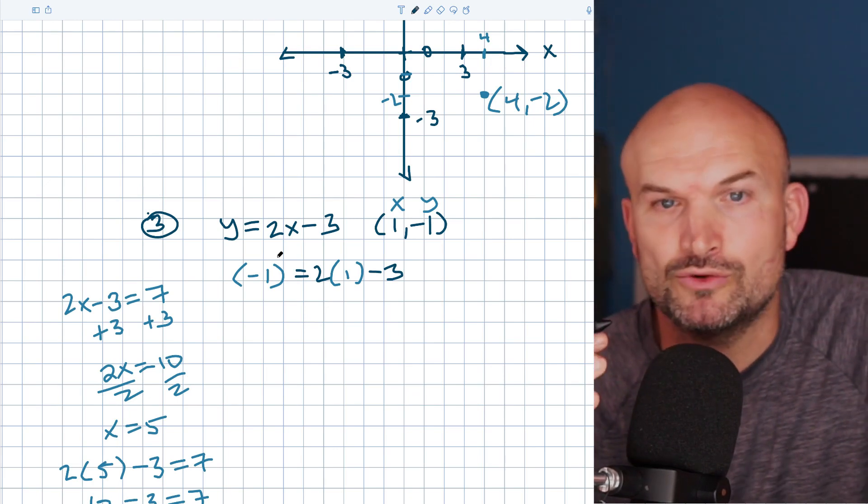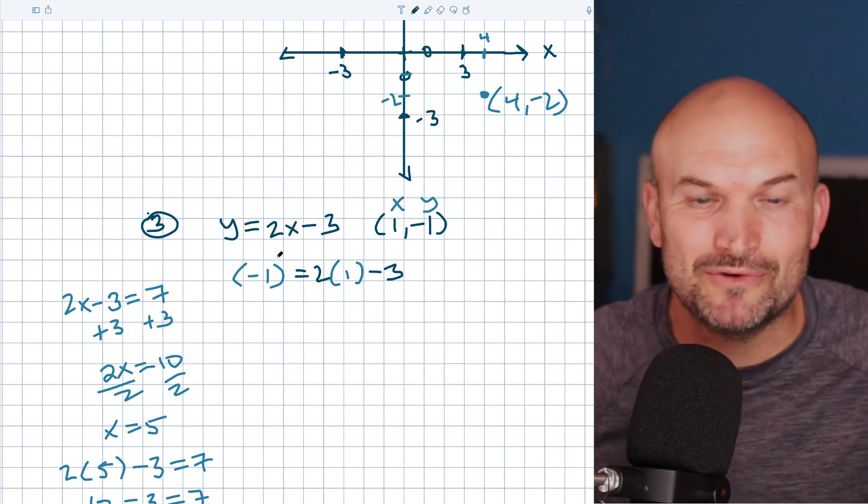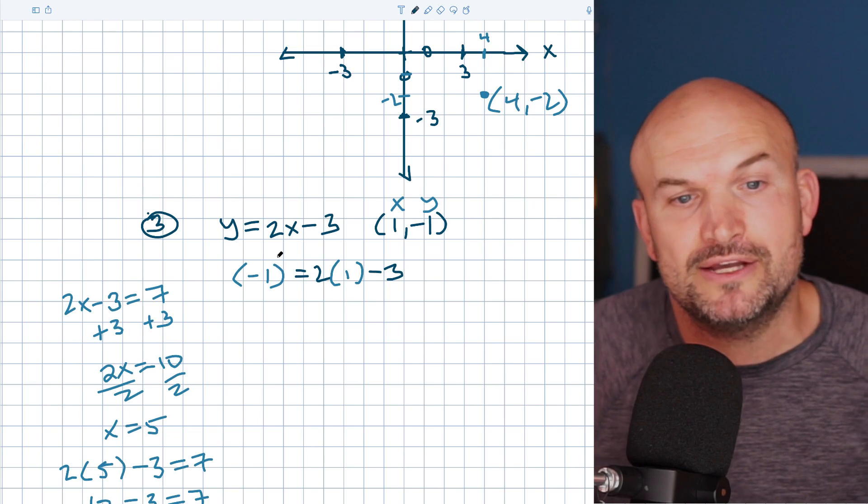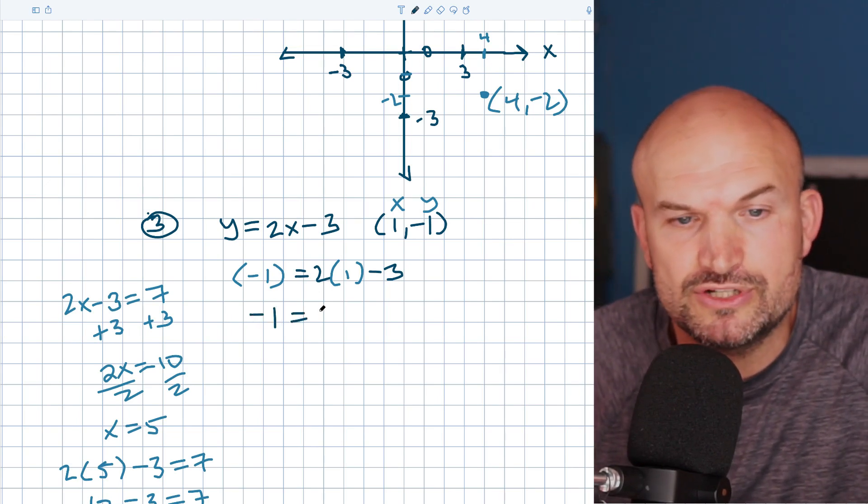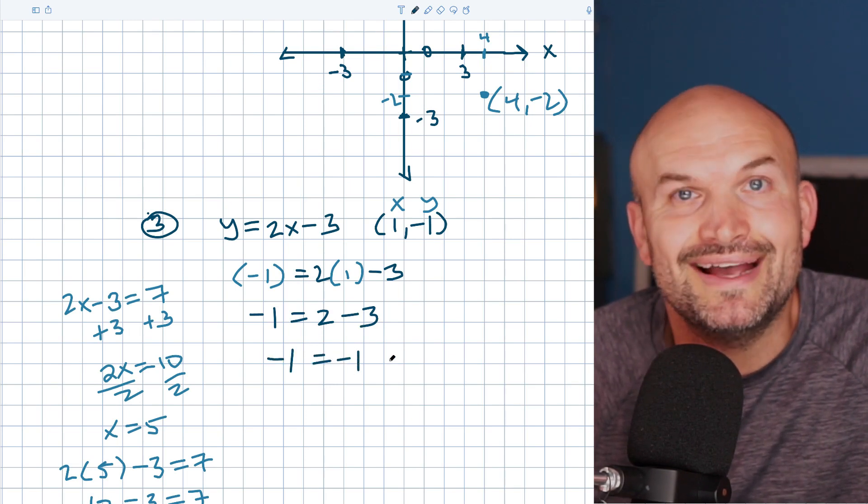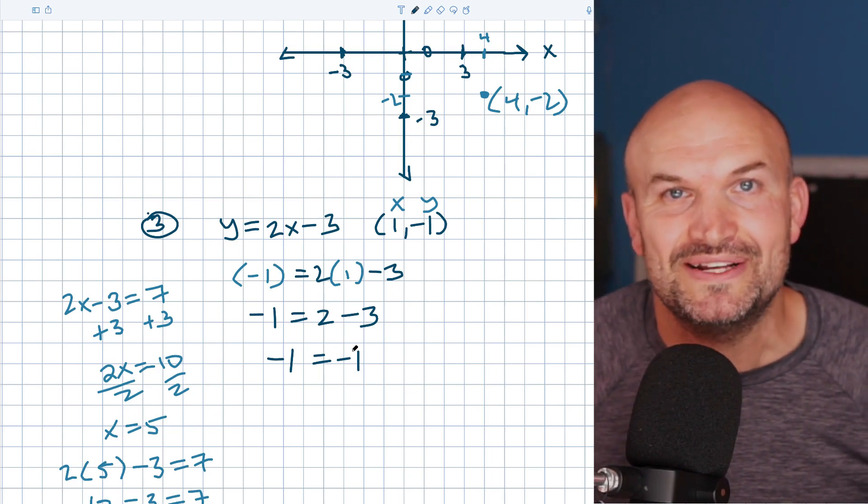Have you ever gone back and looked at your work to be like, where'd that number come from? What did I do here? So it's really helpful. When I put parentheses, that's kind of like me telling me that you plugged something in for that value. Now, let's just go ahead and simplify. So I have negative 1 equals 2 times 1, which is 2 minus 3. 2 minus 3 is going to be negative 1 equals negative 1. And there you go. Now, hopefully, you are ready for graphing linear equations. I'll see you in the next video.